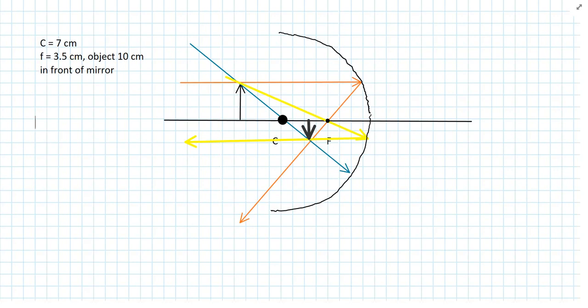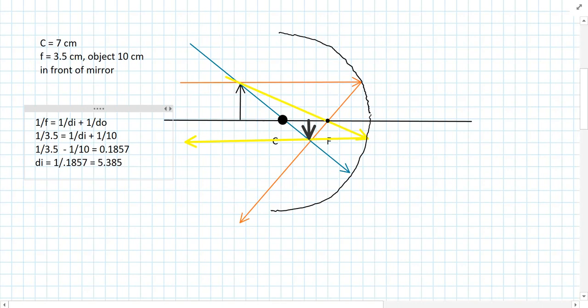What we will do next is we will use the mirror equation. We have 1 over the focal length equals 1 over the image distance plus 1 over the object distance. So, let's plug in the numbers that we know. We'll bring the object distance to the other side, subtract it from both sides. That gives us 1 over di, so di is equal to the reciprocal of that number, or about 5.4.